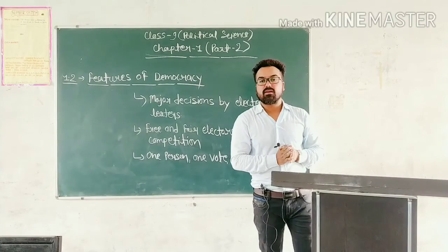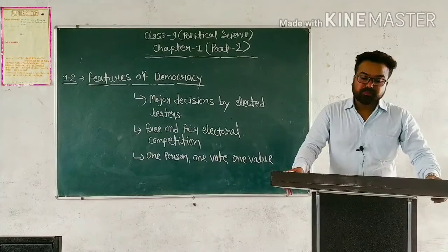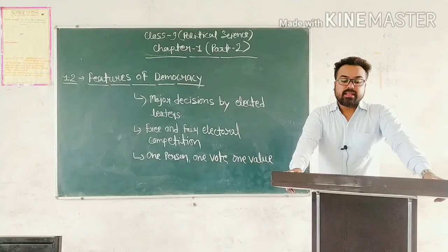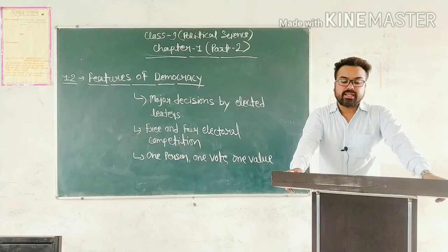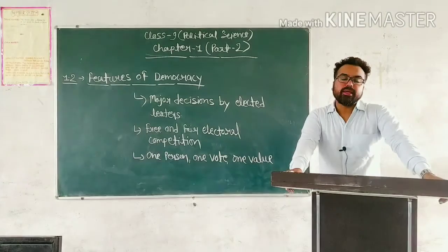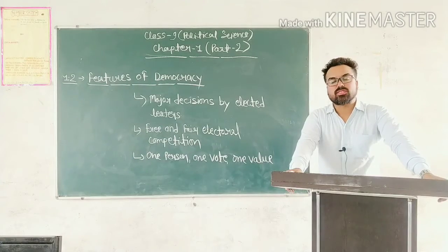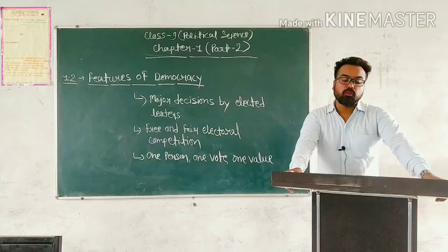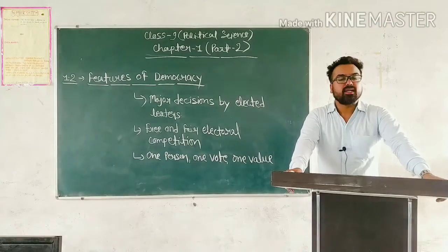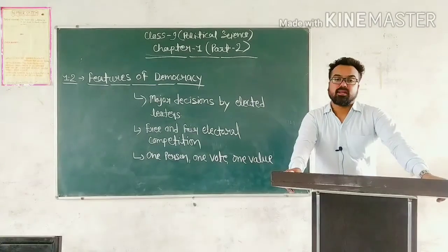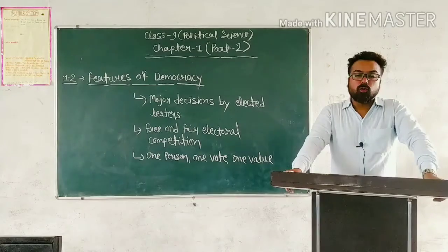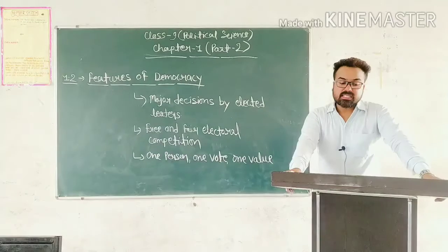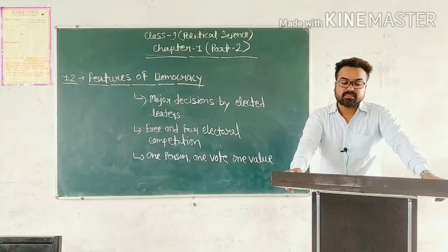پاکستان کی democratic government کو انہوں نے اکھاڑ پھینکا اور خود کو chief executive بنا لیا۔ Later he changed his designation to president. In 2002 he held a referendum — जन्मत संग्रह — that granted him a five-year extension. انہوں نے referendum کے ذریعے اپنا time period 5 سال کے لیے extend کرا لیا۔